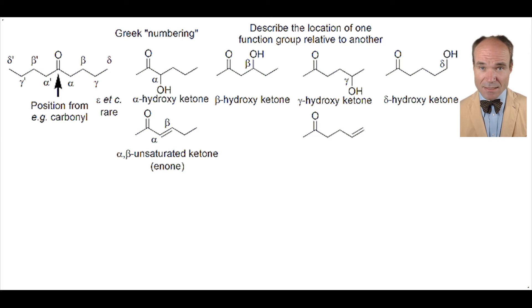Now, if we move the alkene two carbons further away from the ketone, the arrangement would be described as a gamma delta unsaturated ketone.